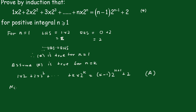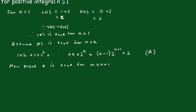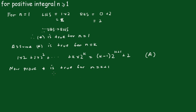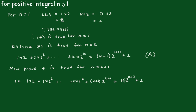Now prove the statement is true for n equals k plus 1. So we write it out as 1 times 2 plus 2 times 2 squared, plus k times 2 to the k, plus (k plus 1) times 2 to the k plus 1, is equal to k times 2 to the k plus 2, plus 2. That's our proof statement.